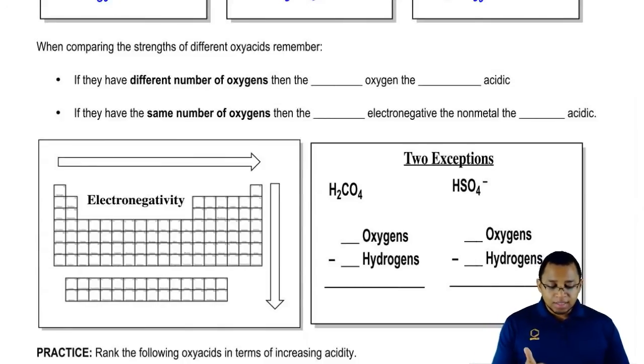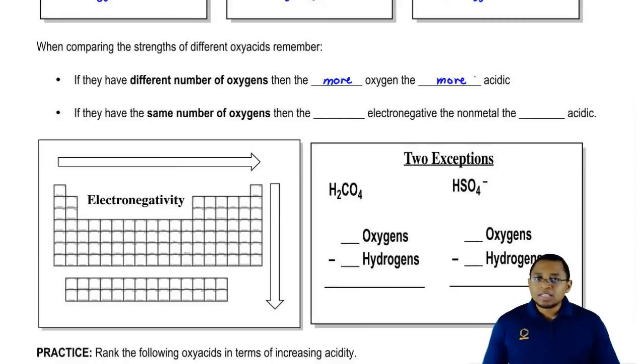When comparing the strengths of different oxyacids, remember, first we have to look at the number of oxygens. The more oxygen, the more acidic because you need to meet that two oxygens more requirement. Again, what you do first when comparing oxyacids, the one with more oxygens will be stronger.